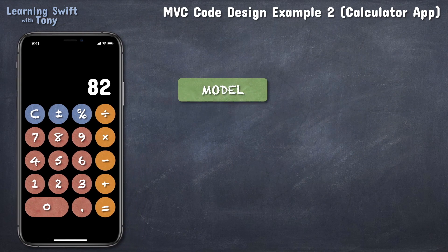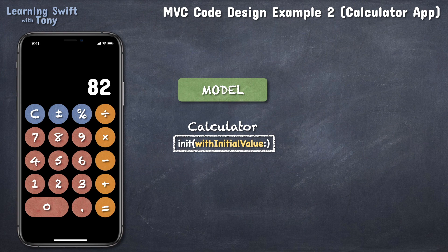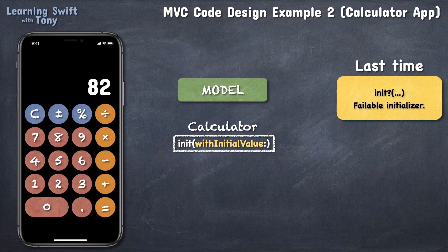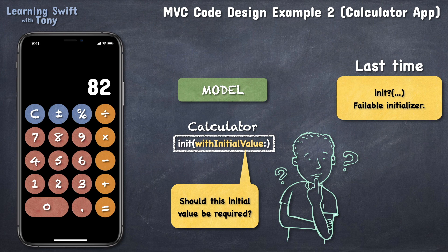We will start by designing the model first. Let's call it calculator. The name calculator kind of makes sense. To initialize this model object, we can ask for an initial value. Now, last time we had a failable initializer, that init call with a question mark, since if the game didn't get an initial set of data that is non-empty to work with at initialization, the game couldn't exist. So there was a possibility the initializer could fail. But this time it's different. We can choose to provide a way to initialize the calculator with an initial value, but there's no reason to make it a requirement. An initial value is not really required for a calculator to exist, because we can start with an initial value of zero by default.